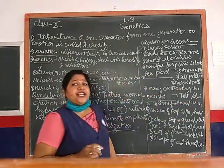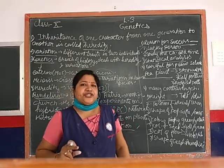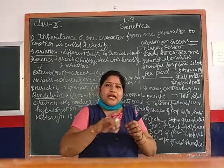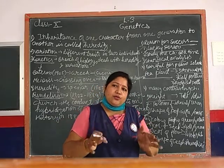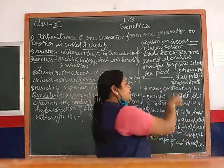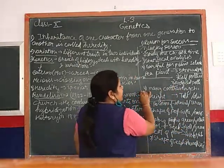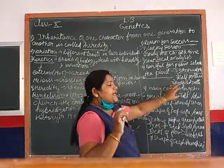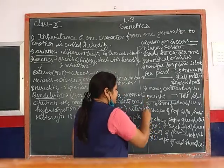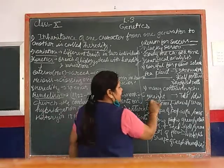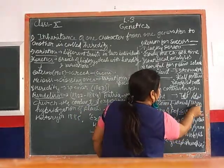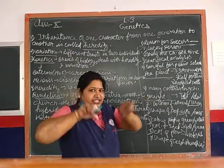He selected pea plants with contrasting characters - two forms of one character. He selected seven characters at a time. First, the height of a plant - two characters: tall and dwarf. Second, the position of the flower - axial and terminal. Axial means along the axis, terminal means at the end. Third, the shape of the pod.